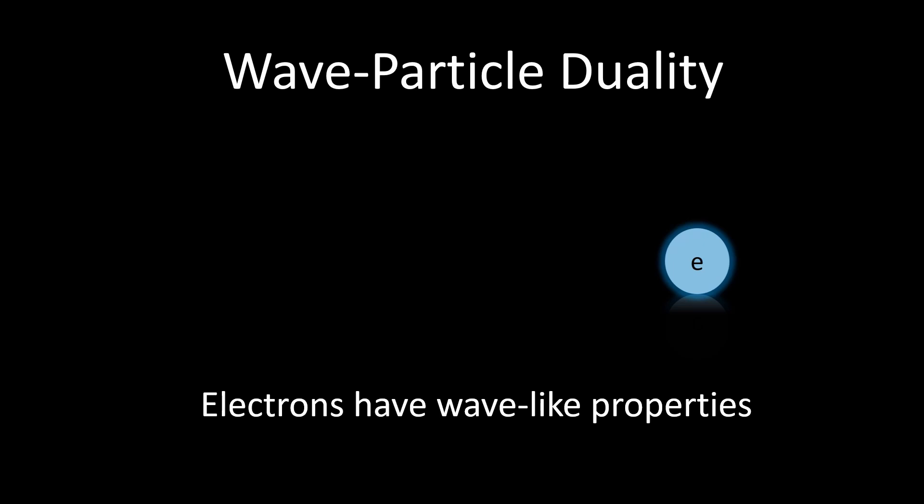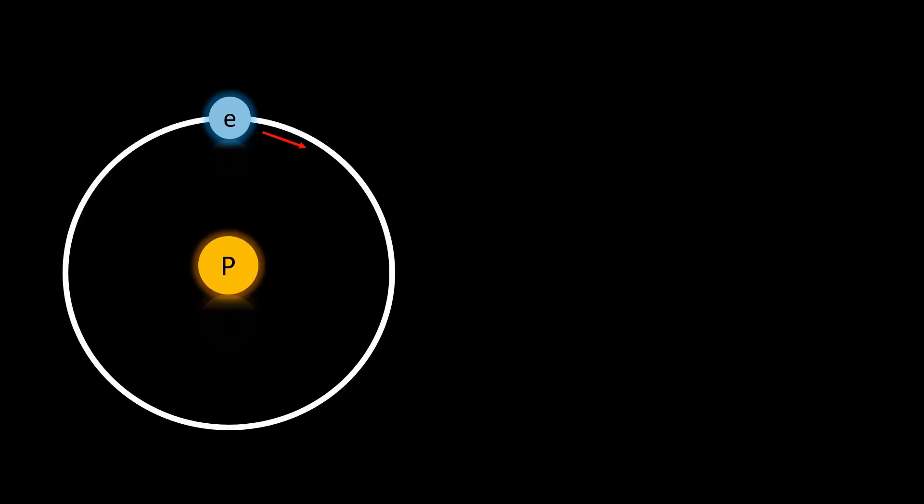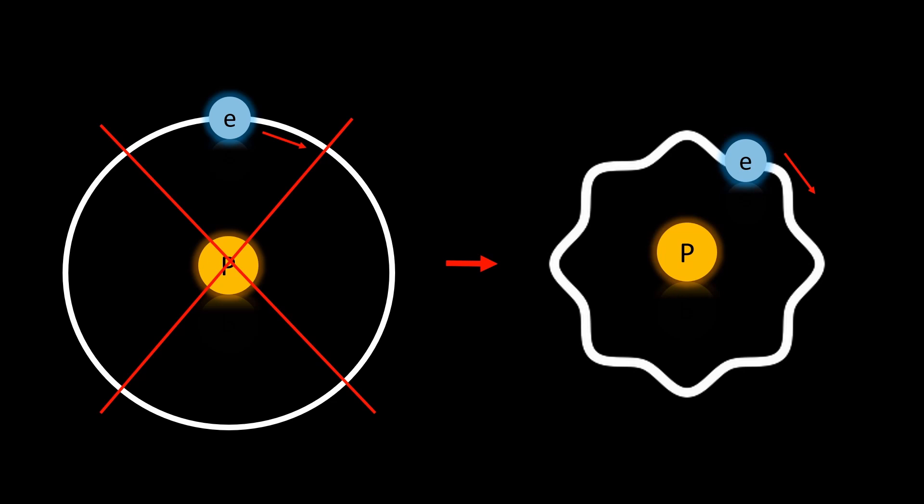And because of this, the path of an electron is not necessarily circular. And Bohr's equations actually made the assumption that they were circular. That's why using them to find radius is not necessarily that accurate.